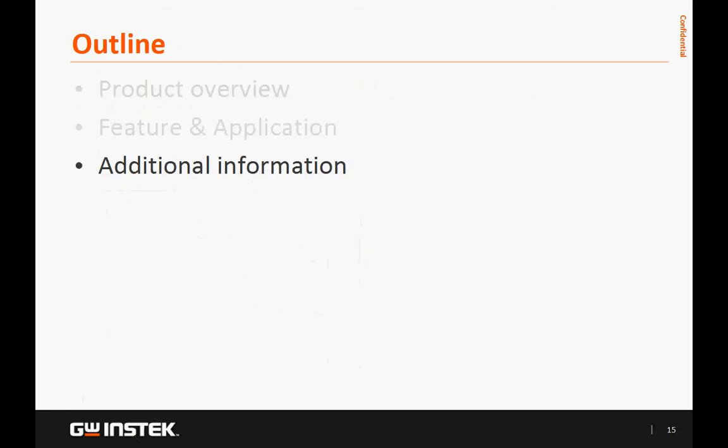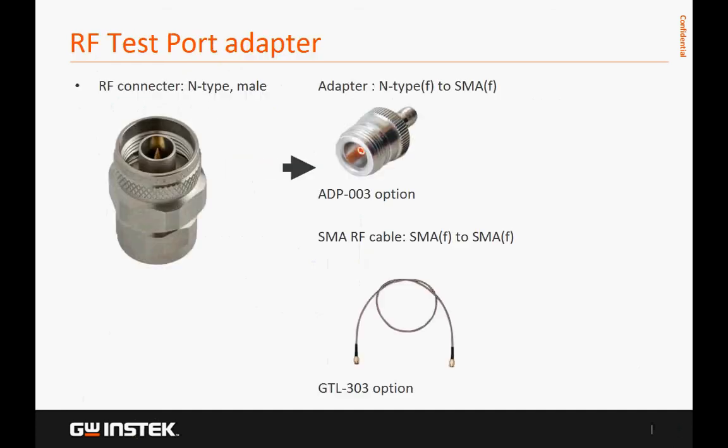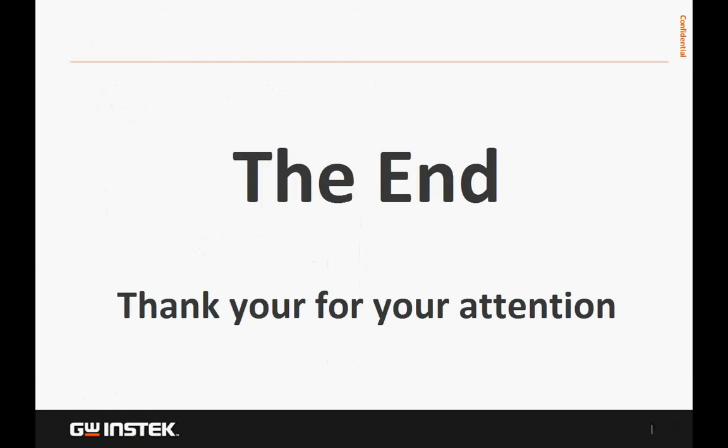Additional information: the USG RF connector is N-type male. Users can combine the ADP003 option adapter and GSP7303 option RF SMA cable for SMA component testing. This is the end of the introduction. Thank you very much for your attention.